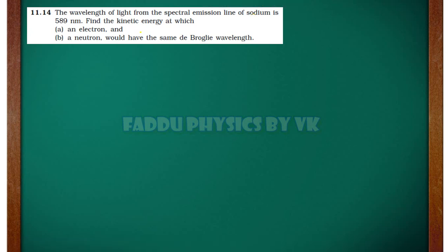Hello dear students, welcome to Phytophysics by VK. Today we will do the solution — Question number 11.14. The wavelength given here is 589. Find the kinetic energy at which an electron and a neutron would have the same De Broglie wavelength.